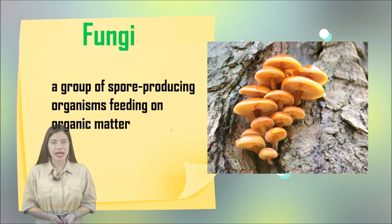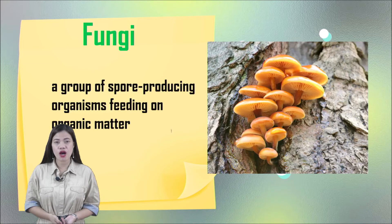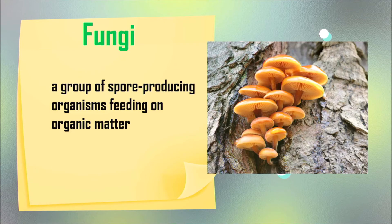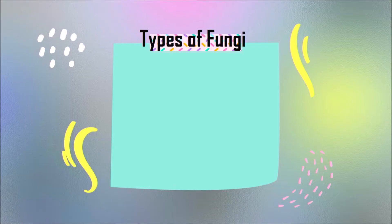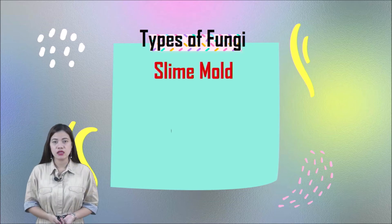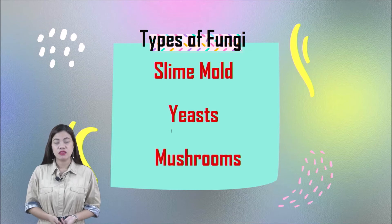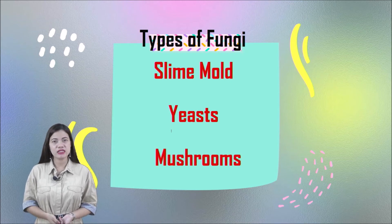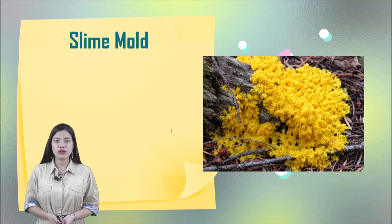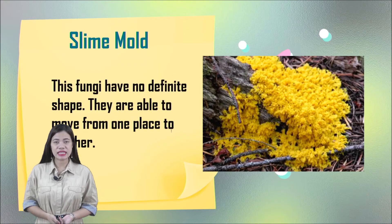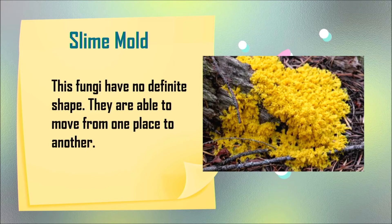Next, we have fungi. Fungi is a group of spore-producing organisms feeding on organic matter. Under fungi, we have three types: slime mold, yeast, and mushrooms. Slime mold fungi have no definite shape. They are able to move from one place to another.